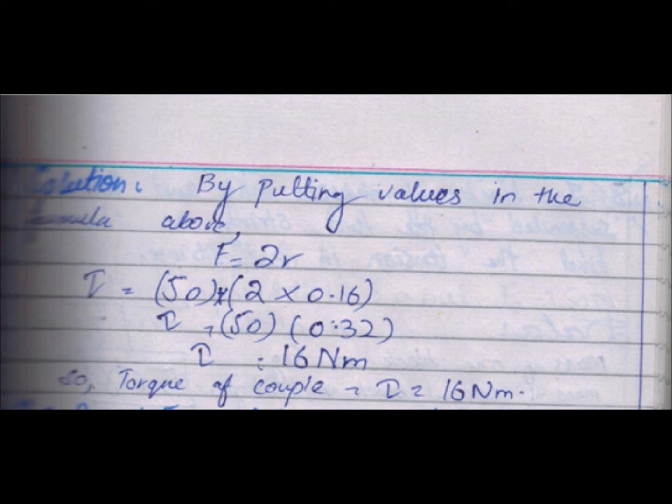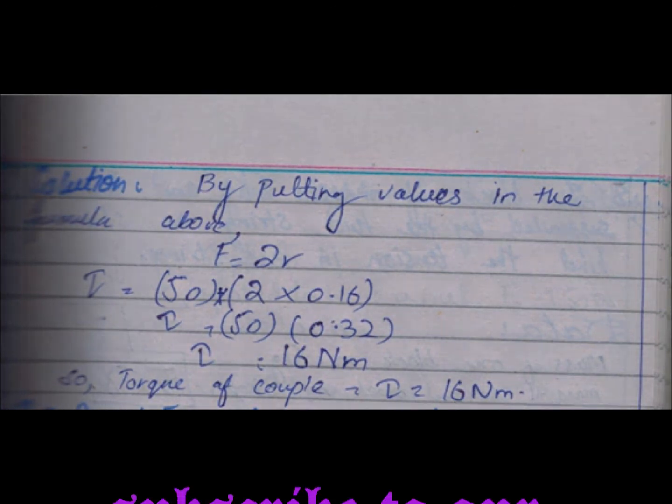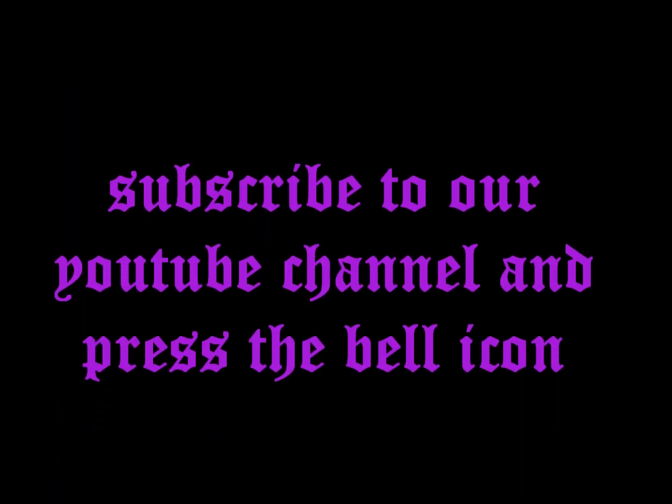Torque is equal to force value 50 into 2 into radius value 0.16. So torque is equal to 50 × 0.32, which gives torque equal to 16 Newton meter. The units are Newton meter, combining radius and force.